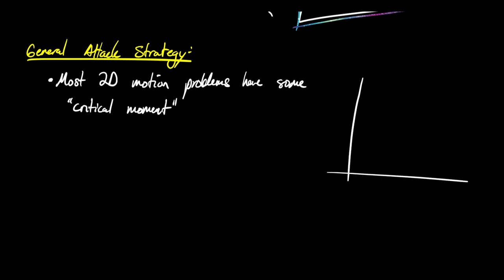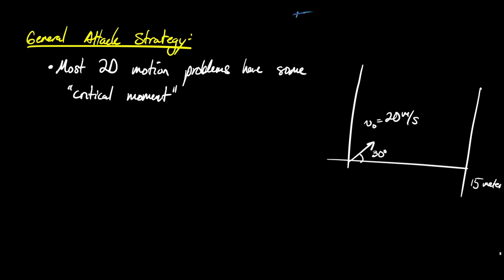One example we're going to study is launching a ball with speed 20 meters per second at an angle of 30 degrees, and asking what height is it when it hits a wall at location 15 meters away. Will the ball hit in the middle, high, or low on the wall — or not even make it? The critical moment of this 2D problem is when the ball has reached horizontal location 15 meters.